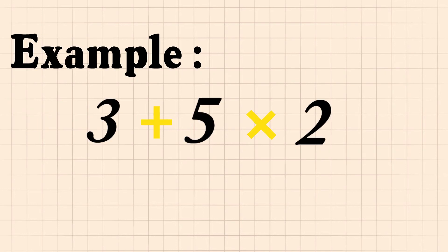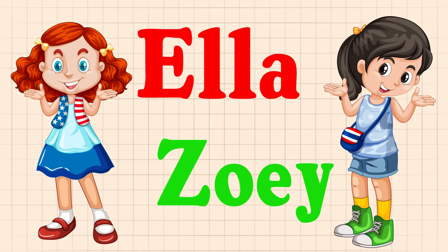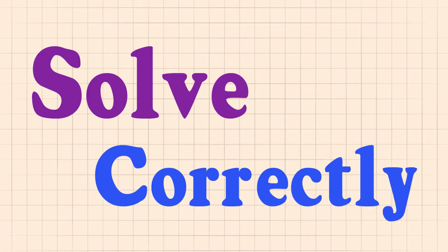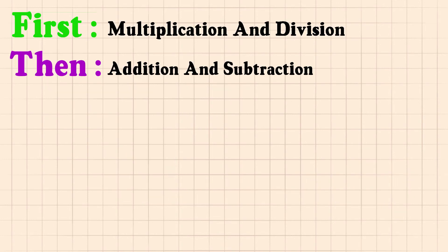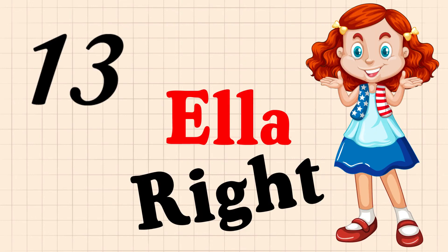Now let's take an example: 3 plus 5 multiplied by 2. Does this look familiar? Yes — it is the same problem we gave to Ella and Zoe. As we now know the order of operations, we can solve the problem correctly. We do multiplication first: 5 multiplied by 2 gives us 10, and 3 plus 10 is 13. So guess what? Ella was right!